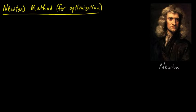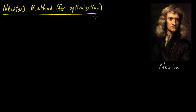Newton's method is an iterative algorithm for finding the points where a function equals zero — in other words, finding the zeros of a function. And Newton's method, when applied to optimization, gives a procedure for finding the minima or maxima of a function.